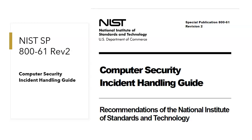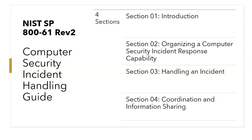This special publication 800-61 is divided into four sections. The first section is an introduction. The second section is about organizing a computer security incident response capability in any organization. The third section discusses how to handle an incident. The fourth section discusses coordination and information sharing activities in case of an incident.